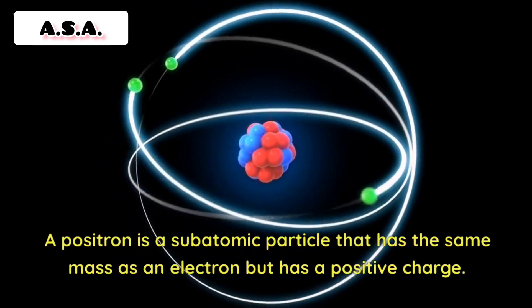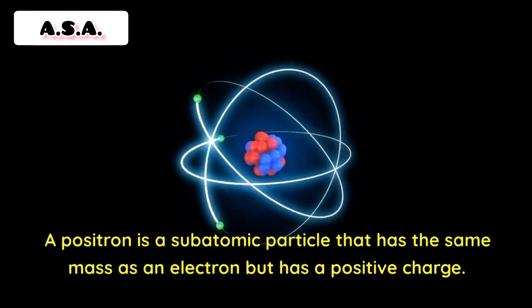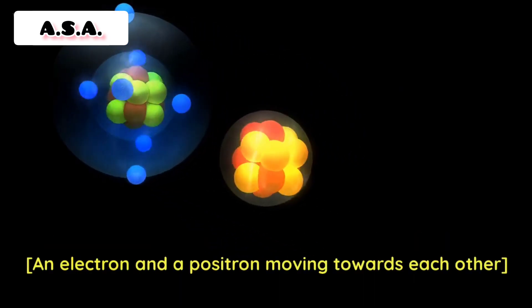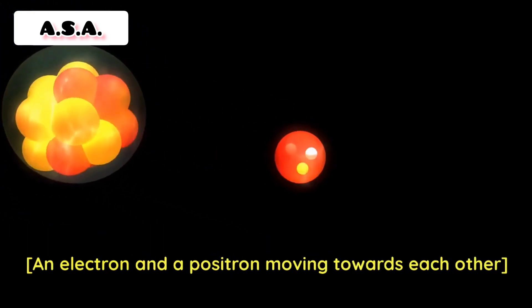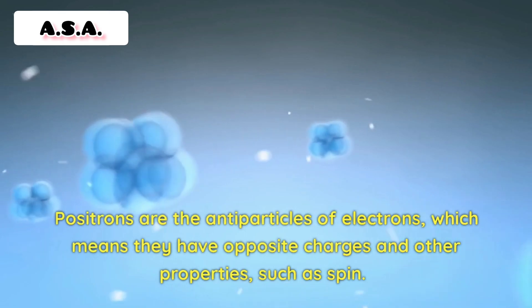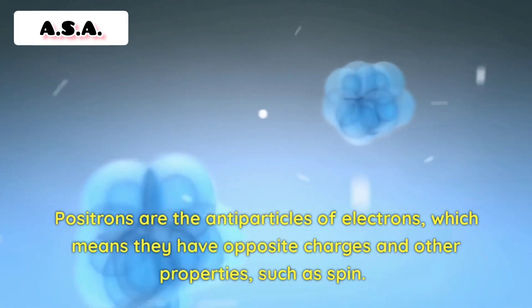A positron is a subatomic particle that has the same mass as an electron, but has a positive charge. Positrons are the antiparticles of electrons, which means they have opposite charges and other properties, such as spin.